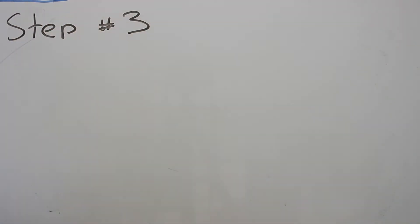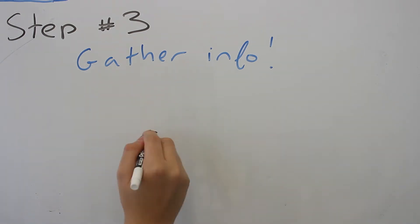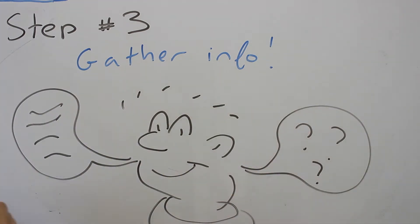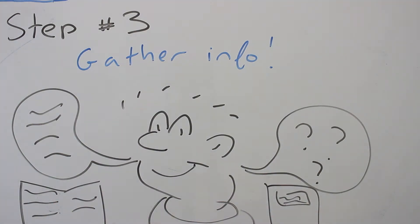Step number three: once you've been assigned an article, start gathering information. Read up on the topic. What existing knowledge is there on the issue that you can build on? Or interview people, but make sure you go beyond your roommates and friends.